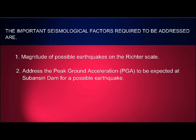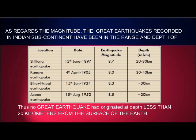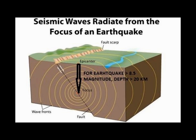Importantly, the focus or depth — that is, the point of origin of the earthquake from the surface — has ranged between 20 to 40 kilometers. Even all over the world, earthquakes ranging between 8.5 to 9.5 magnitude have originated at a depth not less than 20 kilometers. This is because unless there is sufficient volume of rock mass — that is, adequate rupture width, rupture length, and thickness or depth — the required magnitude cannot be generated.